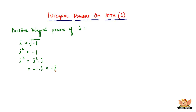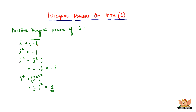So I cubed is negative I. Then we have I to the power 4, which can be written as I squared, the whole squared. We have I squared equal to negative 1, the whole squared, which is negative 1 times negative 1, which equals 1. So I to the power 4 is 1, I cubed is negative I, I squared is negative 1, and I equals square root of negative 1.